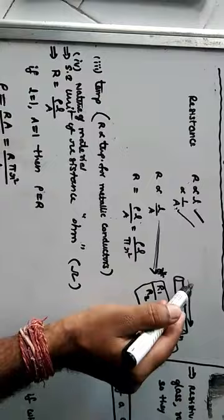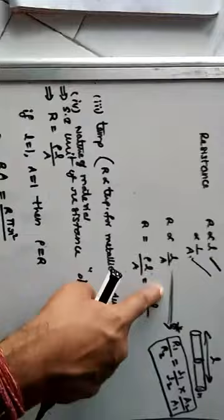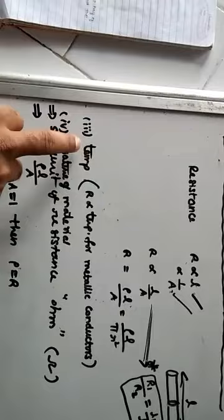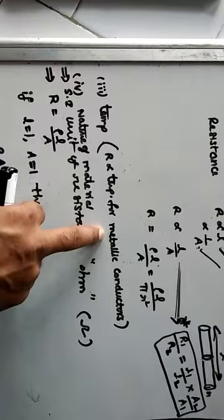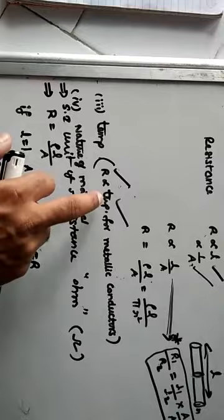These are the points I already explained. Rho is called resistivity, also called specific resistance. Another point: resistance depends upon temperature also. For metallic conductors, if temperature increases, resistance also increases — they are proportional.